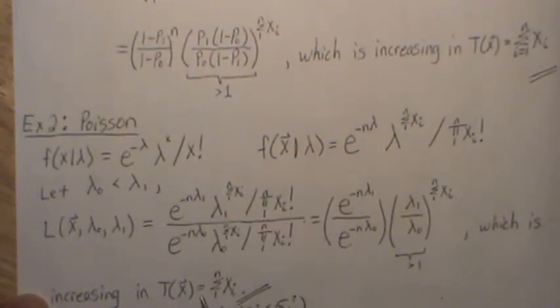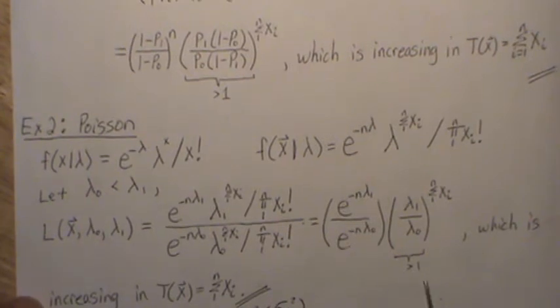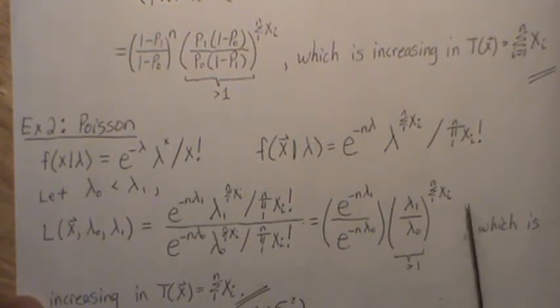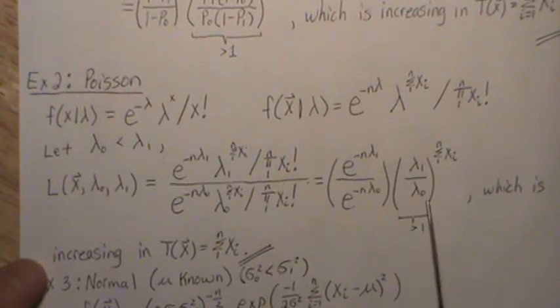This piece of course is the joint density, but we put in lambda zero. This cancels. This we can combine or just leave it like this because it's constant. This right here we combine into this piece, and note that since lambda one is greater than lambda zero, this is greater than one. So then this is an increasing function in the statistic t(x), which is equal to the sum of the xi.